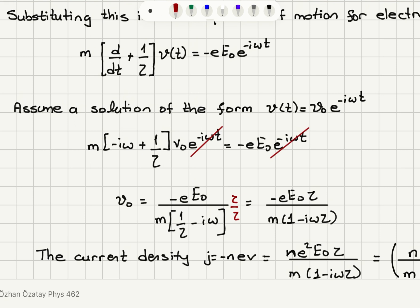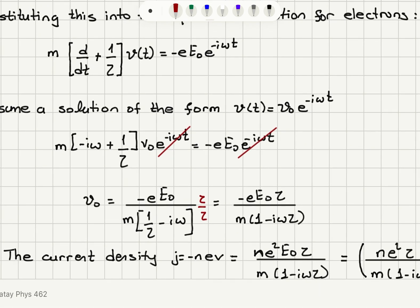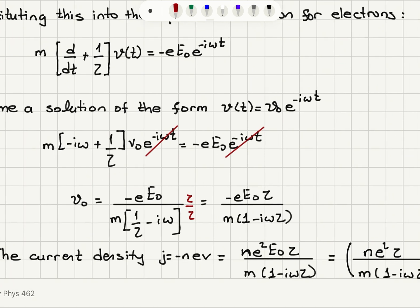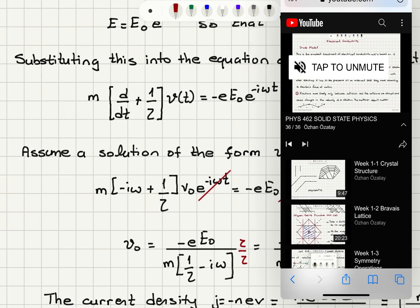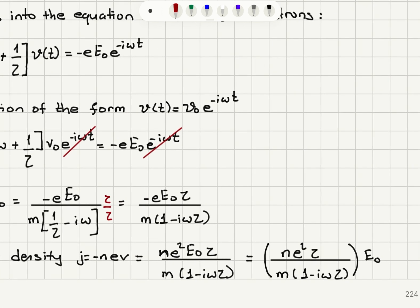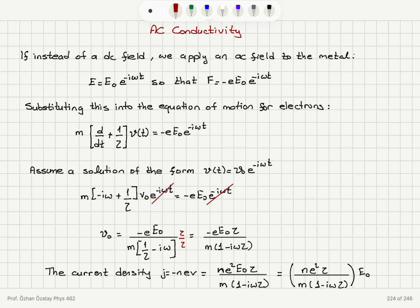Now the current density will be minus N times e times V — electron concentration times electron charge times velocity. Substituting, we have N times e, and for V we have minus e times E0 tau over m(1 minus i omega tau). The two minus signs give us N e squared times E0 tau over m(1 minus i omega tau). So this gives us N e squared tau over m(1 minus i omega tau) times E0 for the current density amplitude. Since this is the V0 term, we should add e to the minus i omega t, so we actually have an oscillatory current.